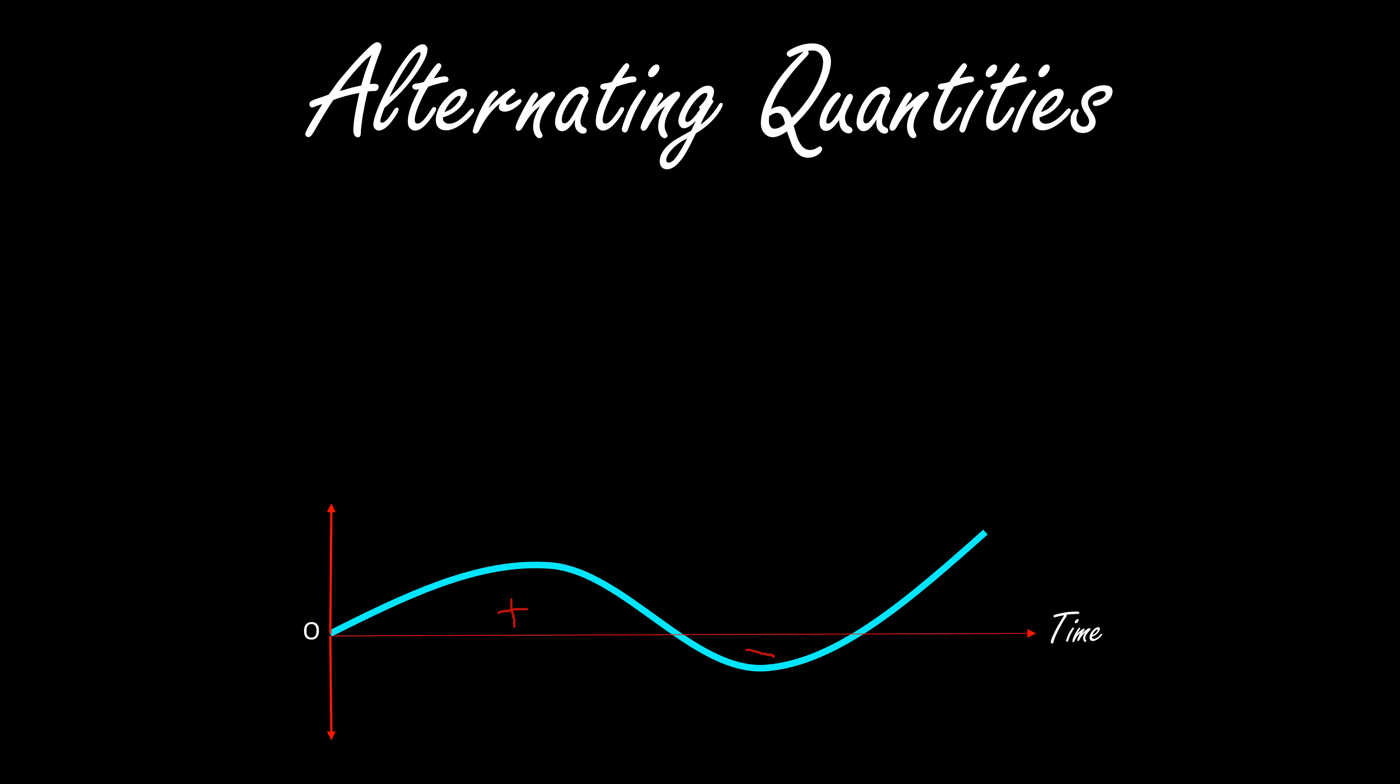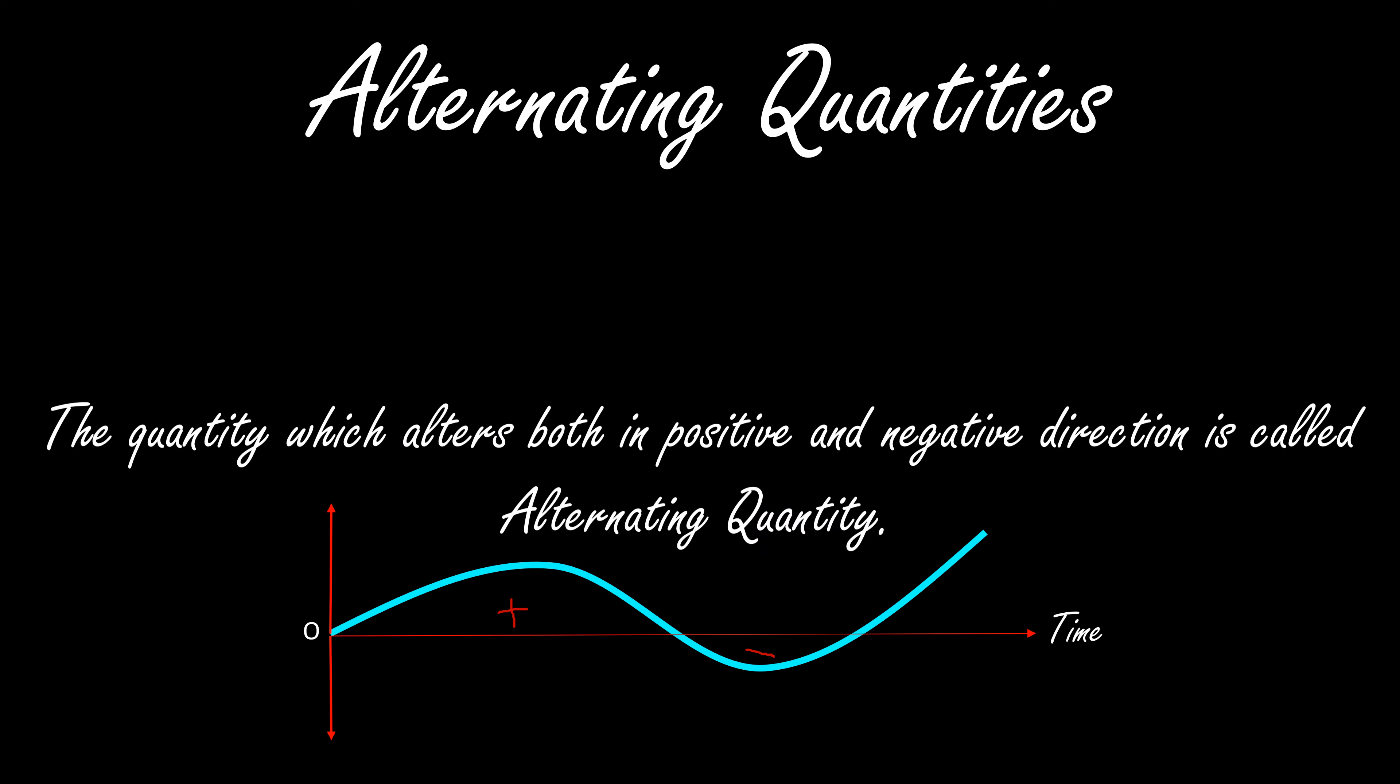It is not restricted to sine waves. The same thing can be observed with square wave, step wave, triangular, or sawtooth waveforms. The quantity which alters in both positive and negative directions is called an alternating quantity.